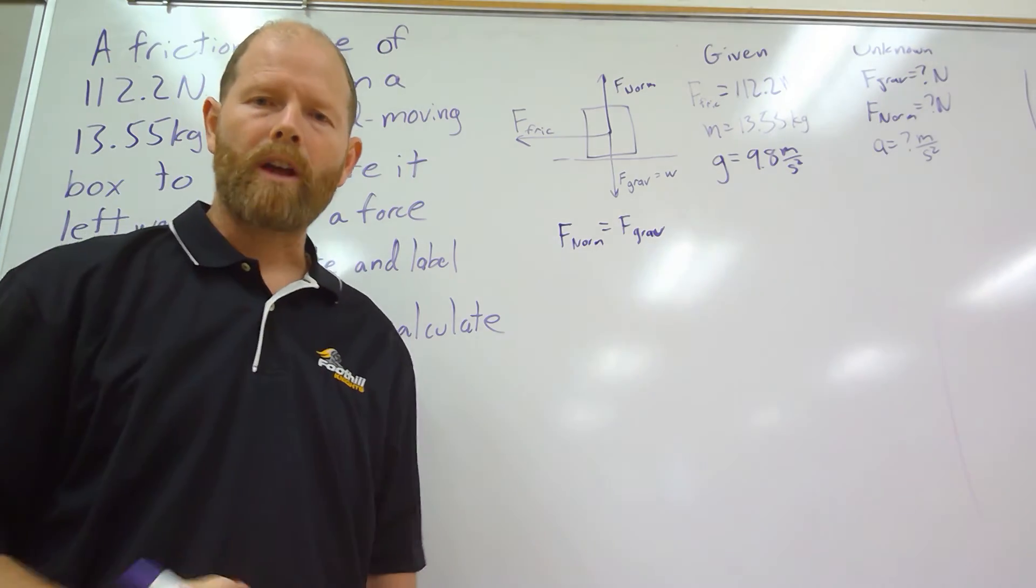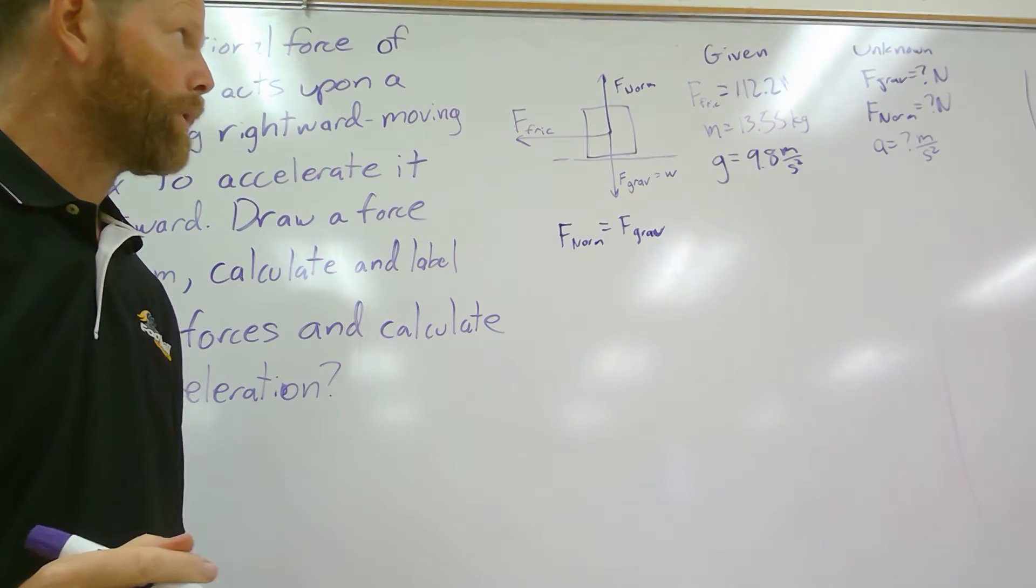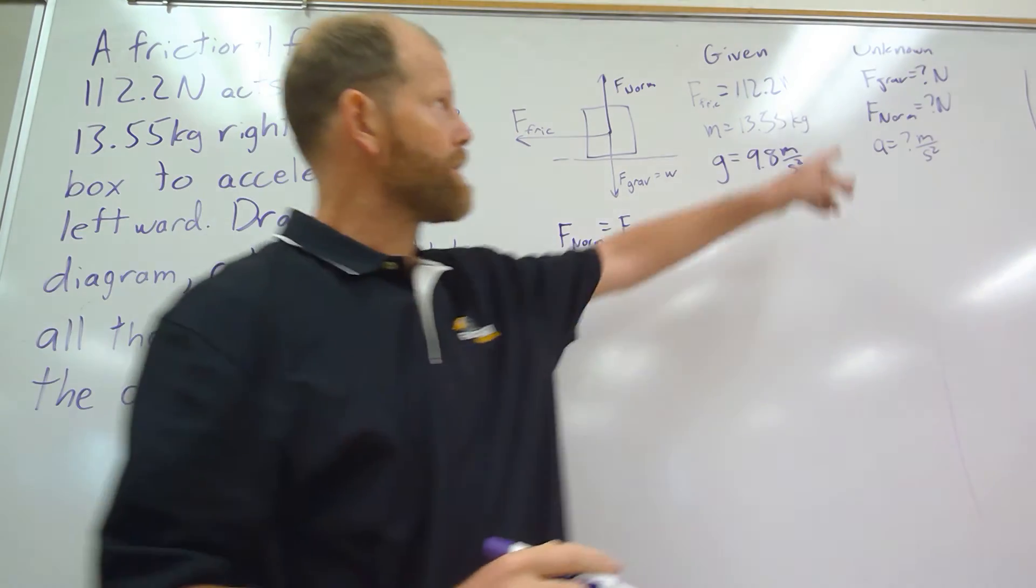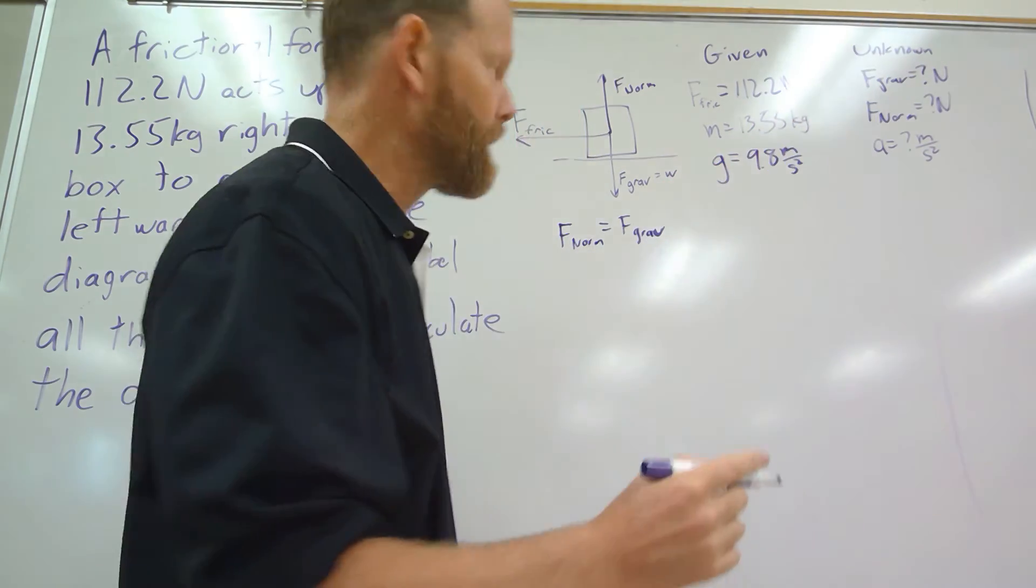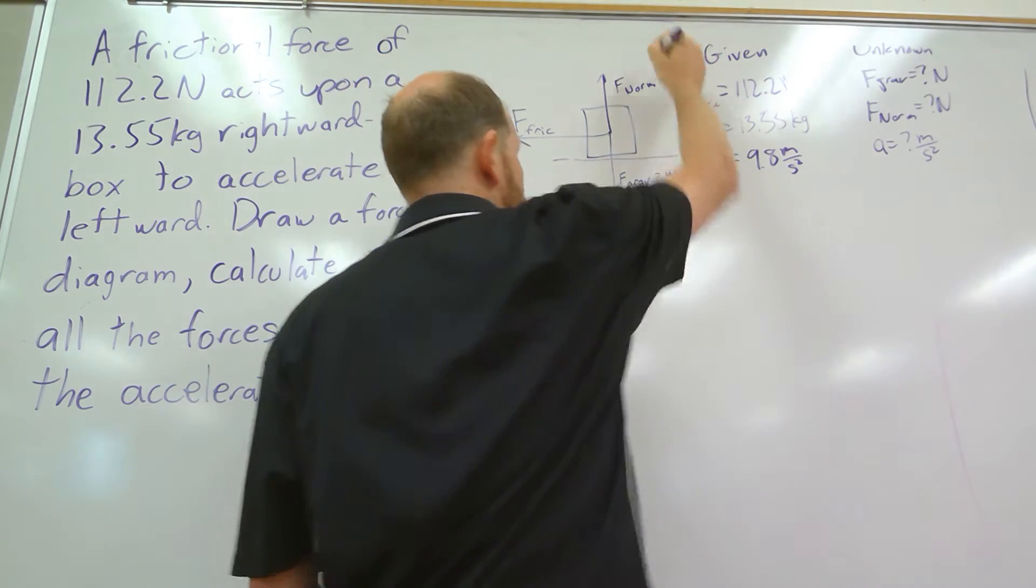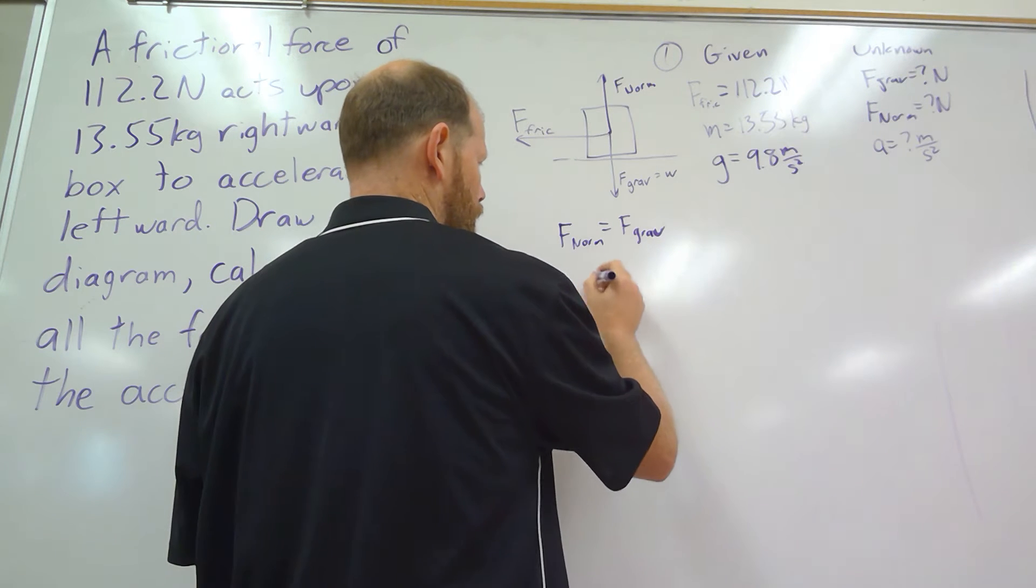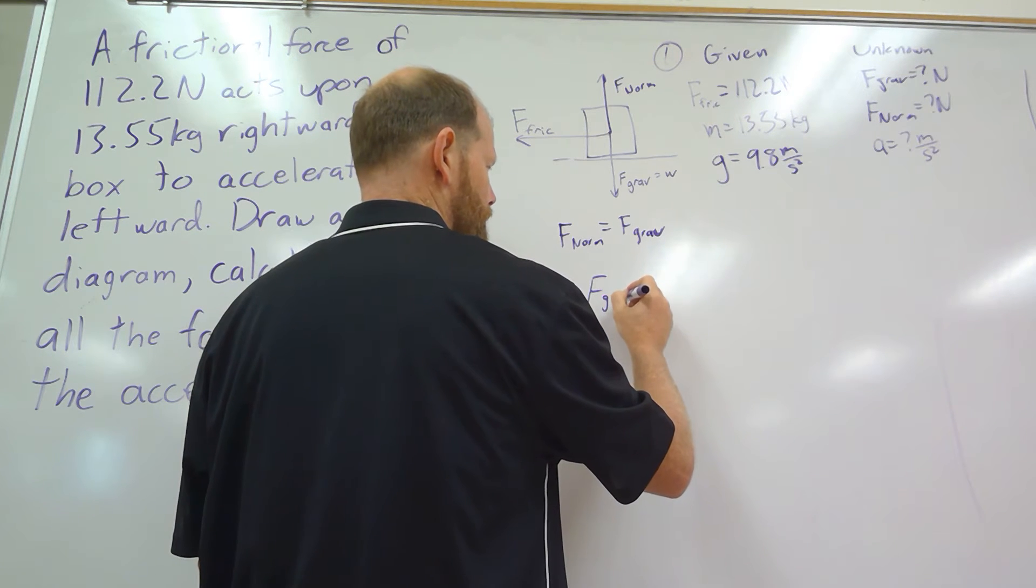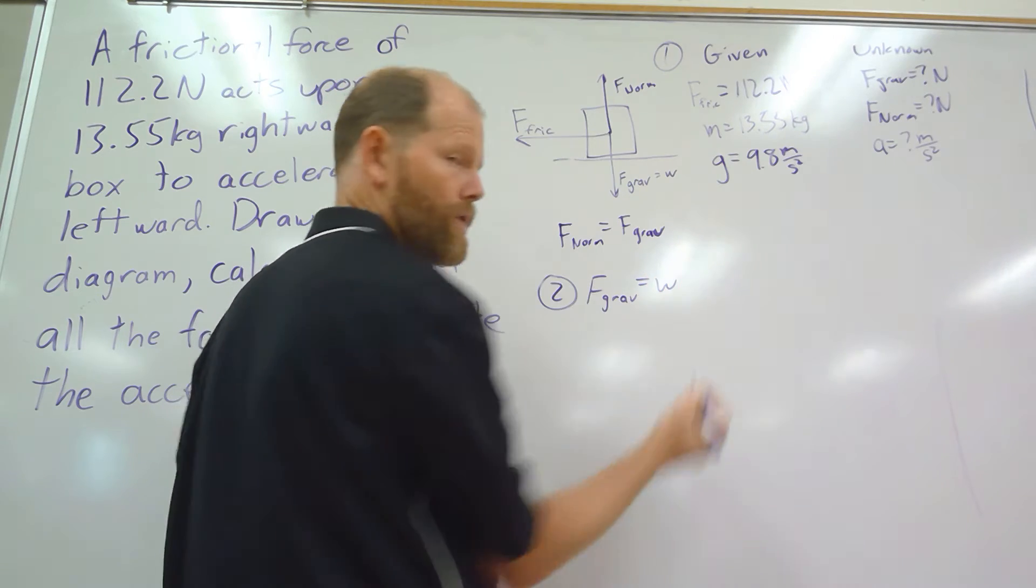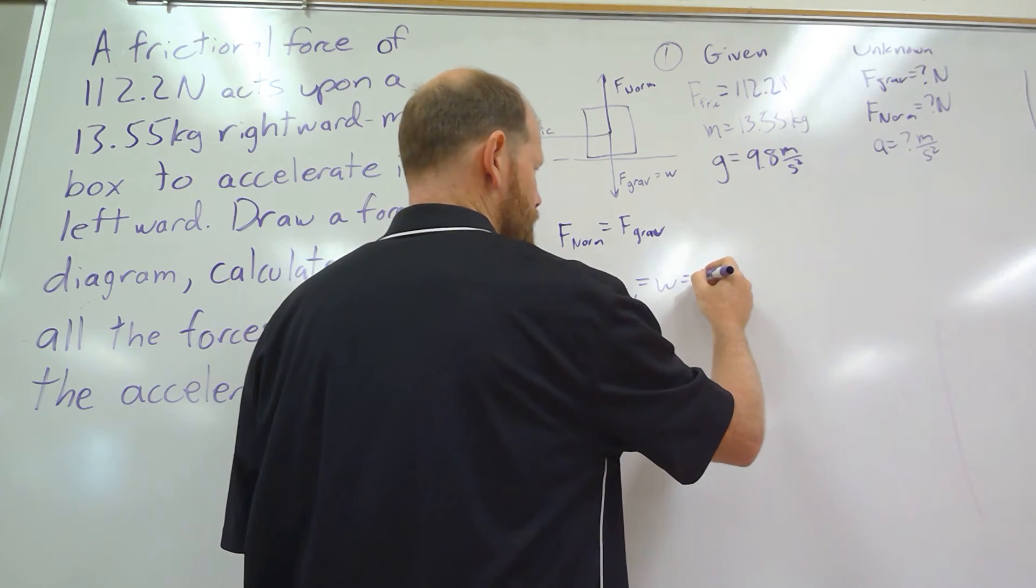Now since we've got a few calculations, we'll run through our five steps a couple of times. First, let's go ahead and calculate the force of gravity since that happens to be the first one we listed. This was step one: listing our givens and unknowns. Step two is to write our equation for gravity.